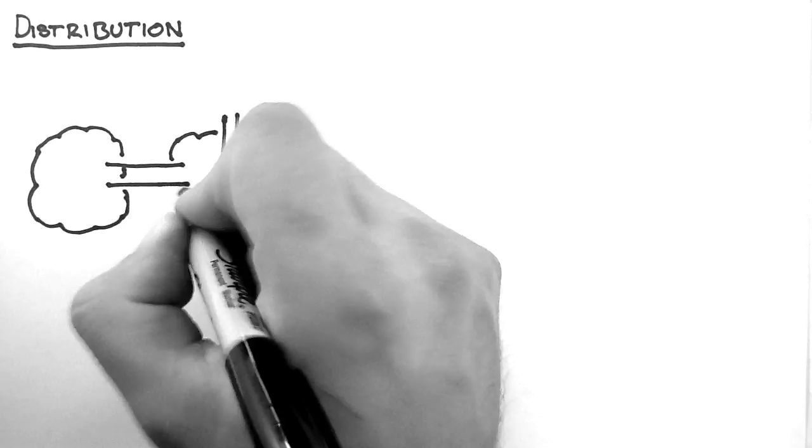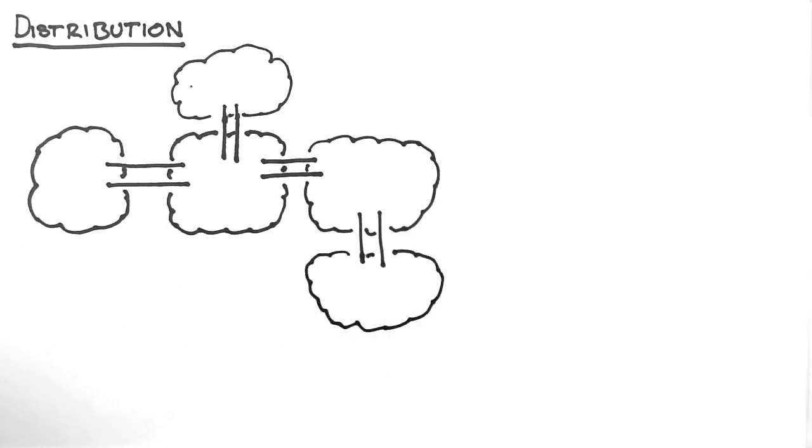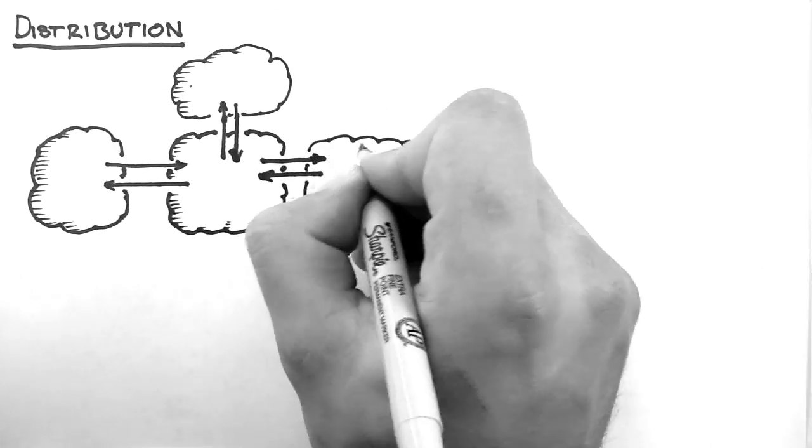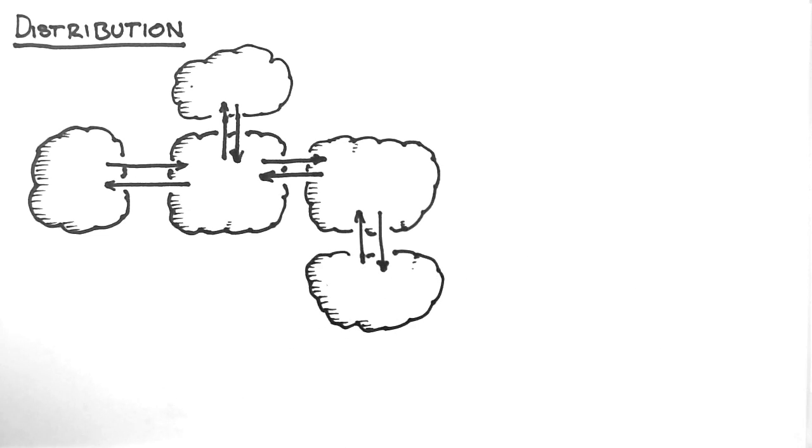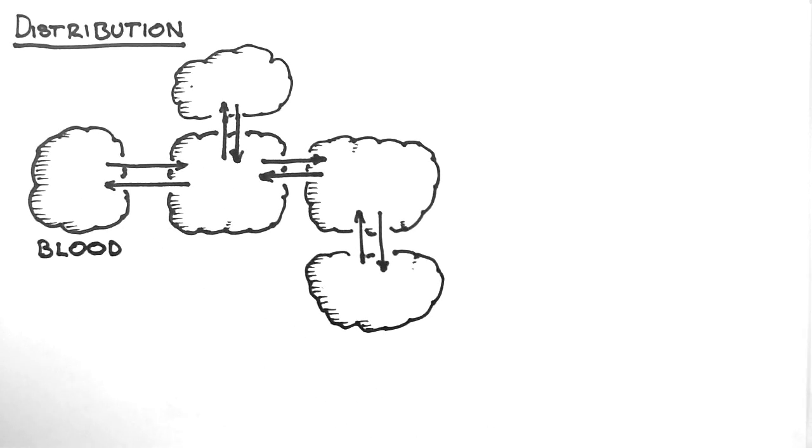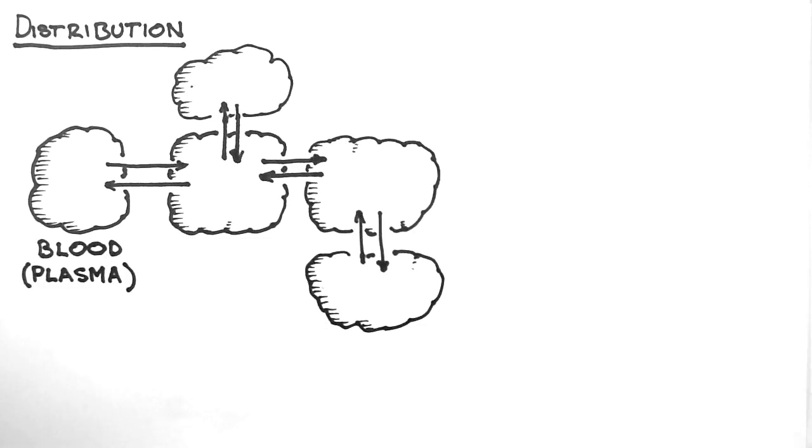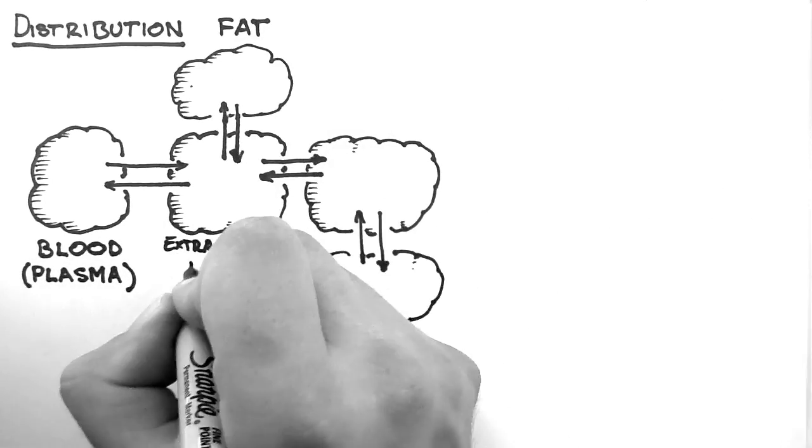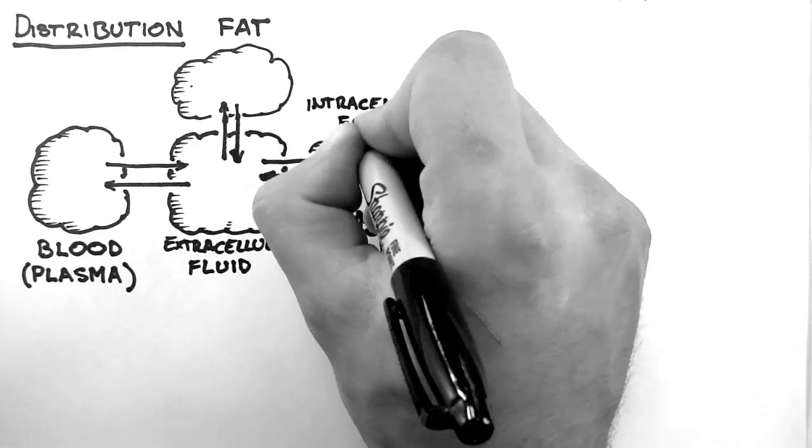For the purposes of distribution, we can consider that the body is made up of four major compartments, which are really collections of fluid, and numerous minor compartments. These major compartments are the blood, or strictly speaking the plasma, fat, extracellular fluid, and intracellular fluid.